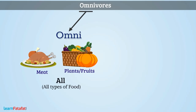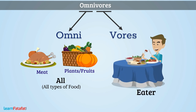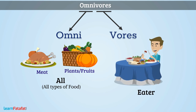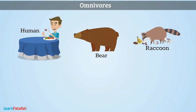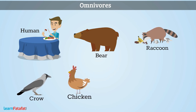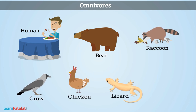Omnivores: 'Omni' means all and 'Vores' means eaters. The animals which obtain their food from plants as well as other animals are called Omnivores. For example, Human, Bear, Raccoon, Crow, Chicken, Lizards, Rats, etc.